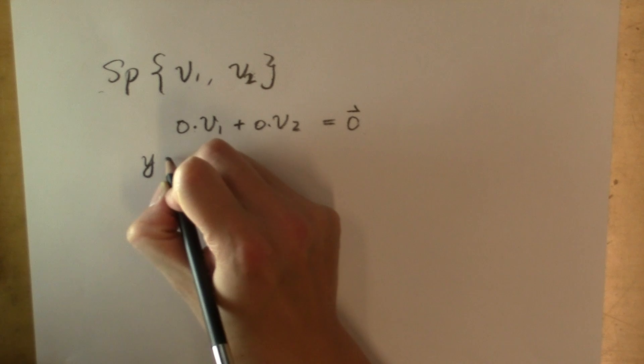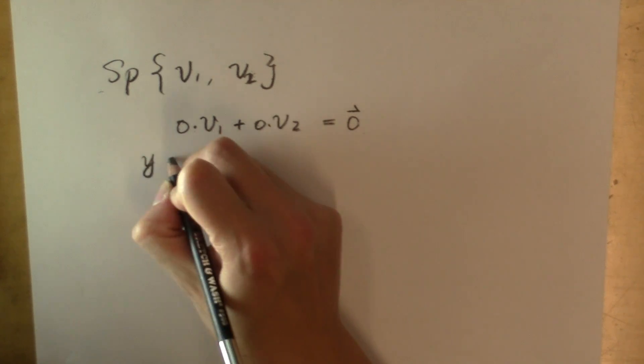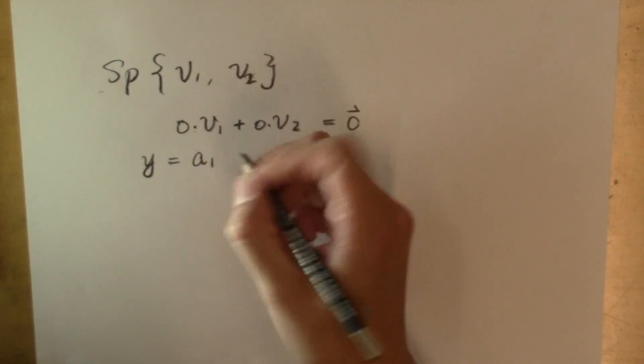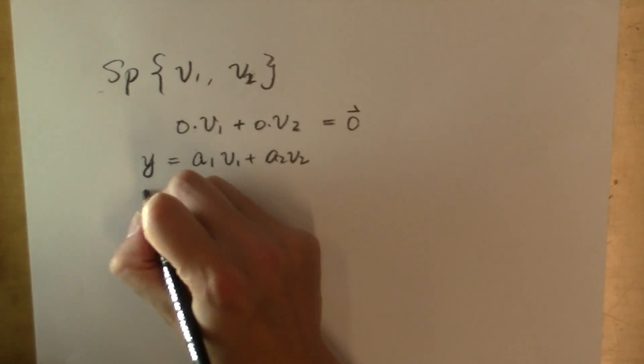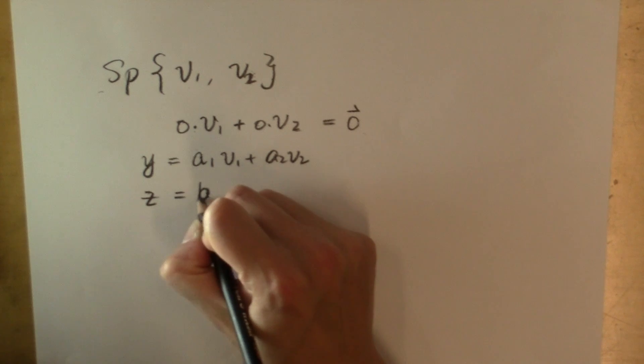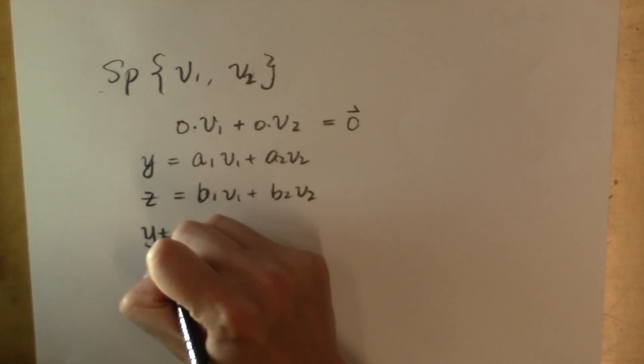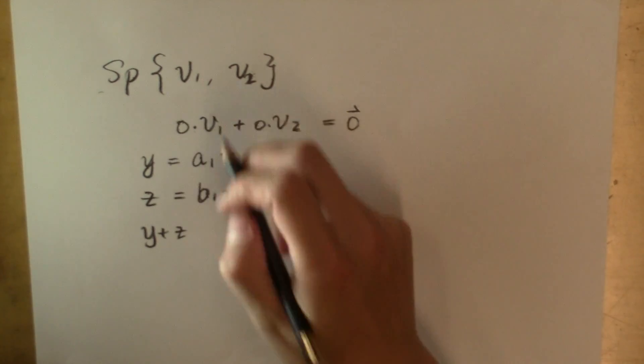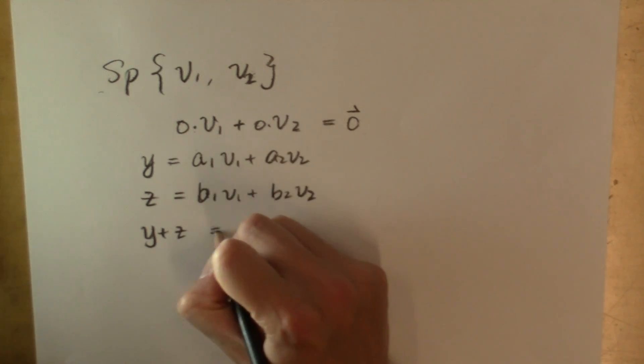If I have a linear combination, so if I have a vector y that belongs in the span of v sub 1 and v sub 2, and I have another vector z in the span of v sub 1, v sub 2, then I claim that the sum of these two vectors y and z is also in the span of v sub 1 and v sub 2. Why is that?